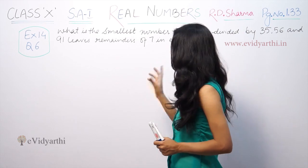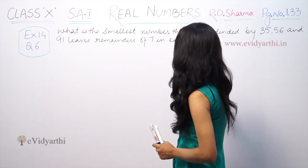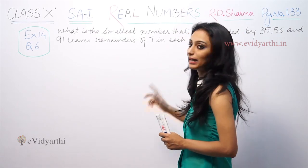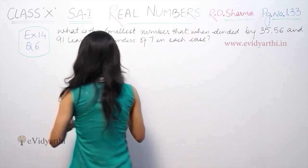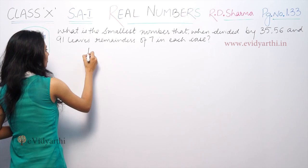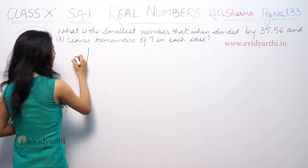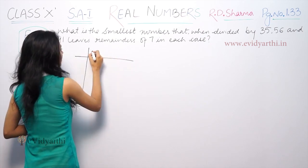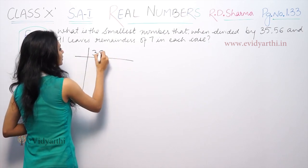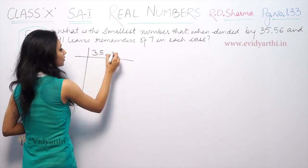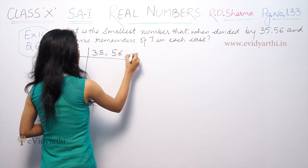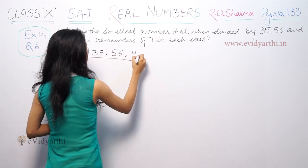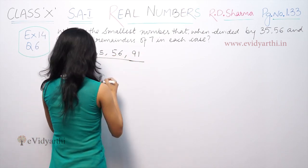So which is the smallest number such that when you divide it by 35, 56, and 91, a remainder of 7 is left in every case?